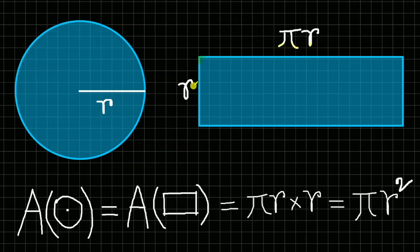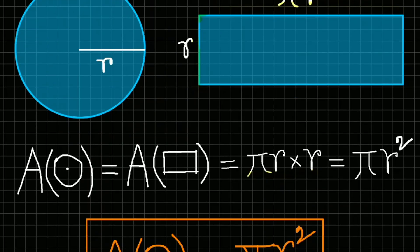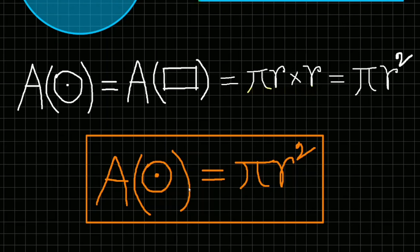Theoretically, we divide this circle into infinitely many portions and reorganize them to get this rectangle with one side being pi r and the other side being r. So what is the area? The area of the circle equals the area of the rectangle, which equals pi r multiplied by r, equal to pi r squared. So the area of the circle A equals pi r squared — our desired formula. The first time I saw this proof as a school student, it completely blew my mind.